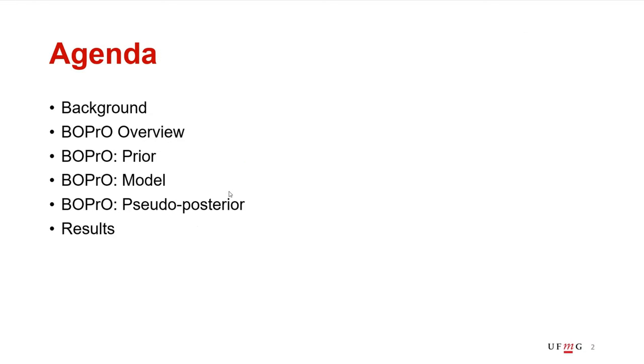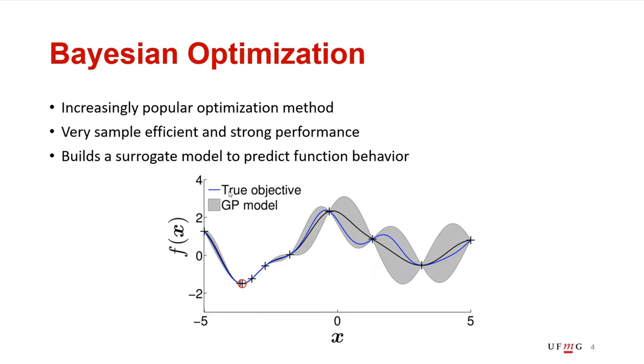Let's start with a quick background. Bayesian optimization is an increasingly popular optimization method that achieves both high sample efficiency and strong final performance. Basically, Bayesian optimization is able to find good configurations or good function values fast and finds a very good final result.